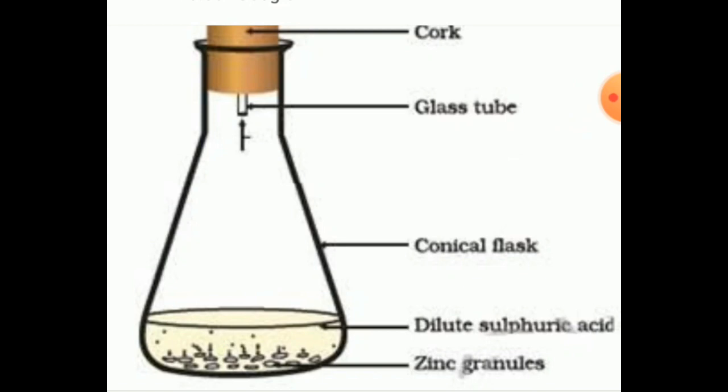In this experiment, we observed two things. First observation: bubbles are seen around the metal — these bubbles indicate that hydrogen gas is being released around the zinc granules. Second observation: the test tube becomes hot, meaning heat is released. From these two experiments, we can see that chemical changes take place during chemical reactions.